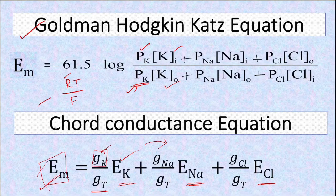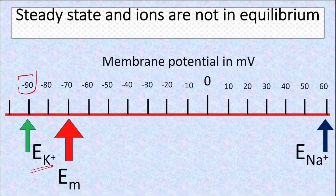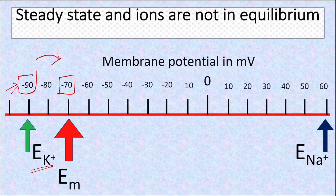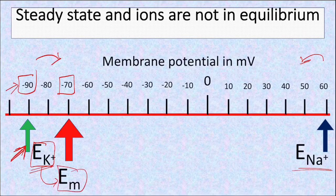The membrane potential is different from the equilibrium potential of most ions, so individual ions are not in equilibrium — they continue to move across the membrane. For example, potassium only stops moving if there is minus 90 millivolts inside; since it is only minus 70, potassium continues to go outside and sodium continues to enter the cell. If ion movements continue for a long period, the concentration gradient itself will change, altering the Nernst potential and thereby influencing the membrane potential as well.